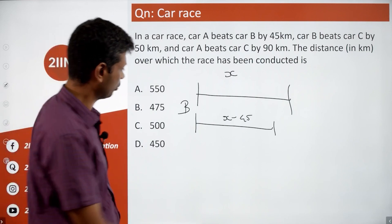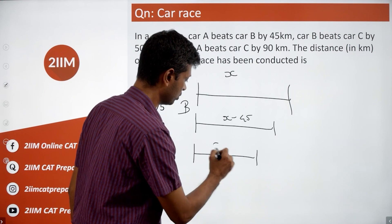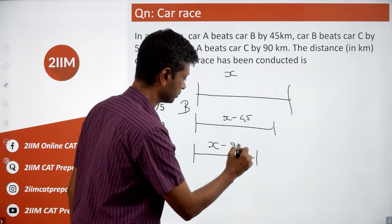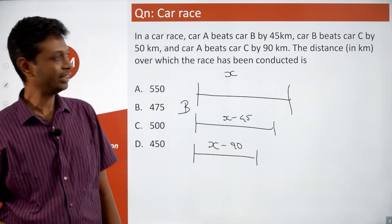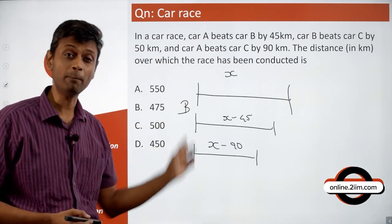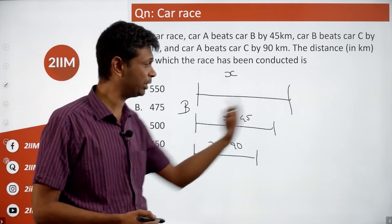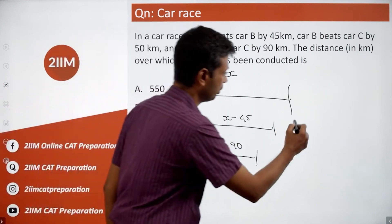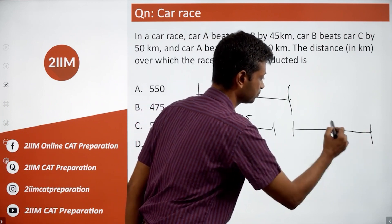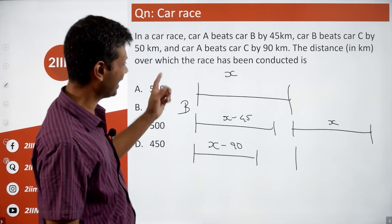A beats C by 90 kilometers, or when A completes the race, C has done only X minus 90. The interesting thing here, we are told that B beats car C by 50 kilometers. That means when B completes the race - so we can't compare this state, B should have completed the race - or when B finishes the whole thing, C would have done only X minus 50.